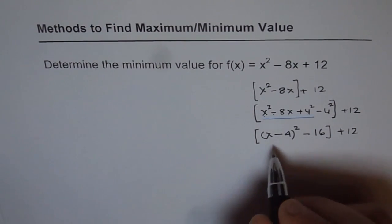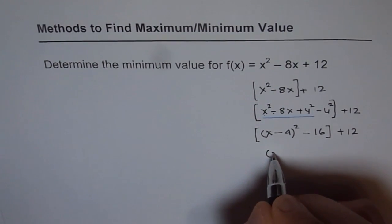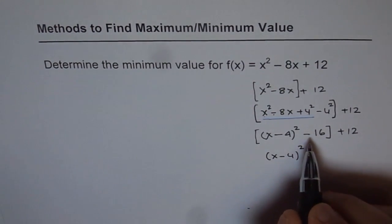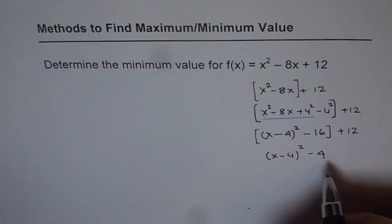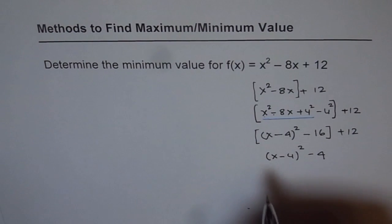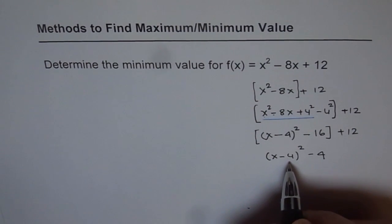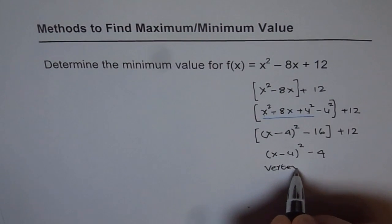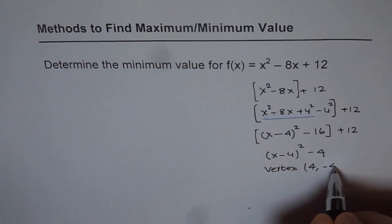Now we can open the bracket and write down this equation in vertex form. It is (x minus 4) squared, and combining the remaining terms: minus 16 plus 12 gives us minus 4. Now this equation is in vertex form, and from here we know what the vertex is. The vertex in this case is at x equals 4, and the minimum value is minus 4.